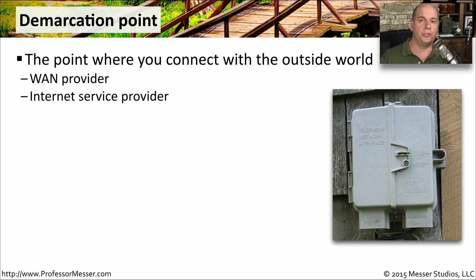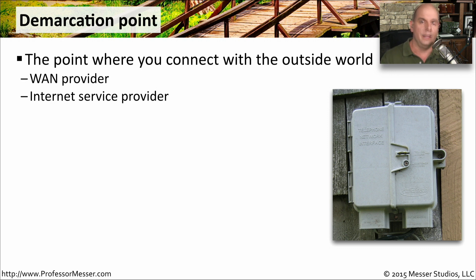When you're dealing with wide area networks, you're almost always working with a third party that's not part of your organization. Because of that, there needs to be a clear delineation between what is inside the network and your responsibility, and what is outside the network — the wide area network that is the responsibility of the WAN provider. We call this line in the sand the demarcation point. This is the place where both sides meet, and you can make a very clear determination of what is your responsibility and what is the provider's responsibility.